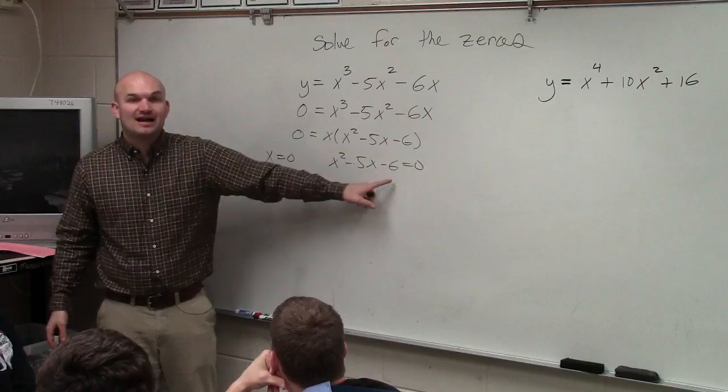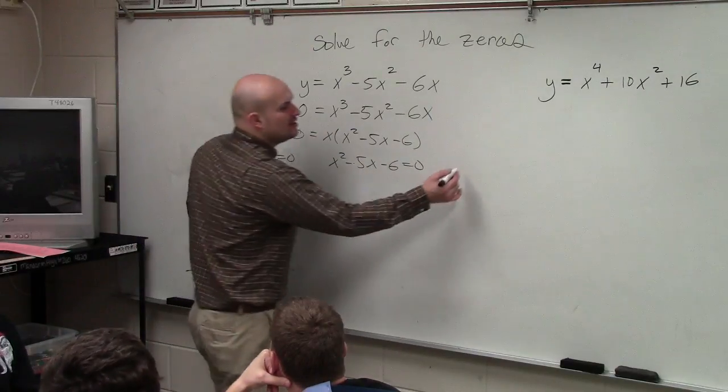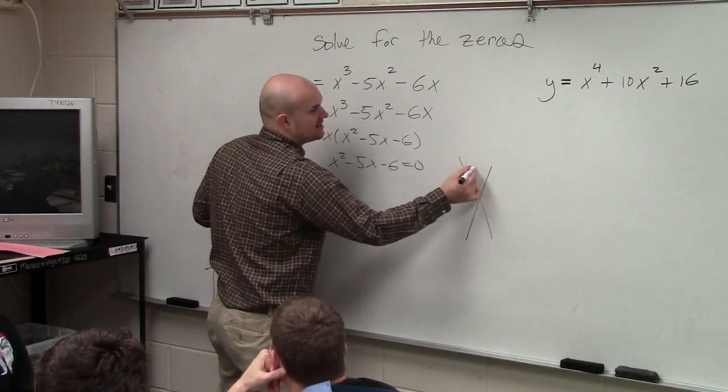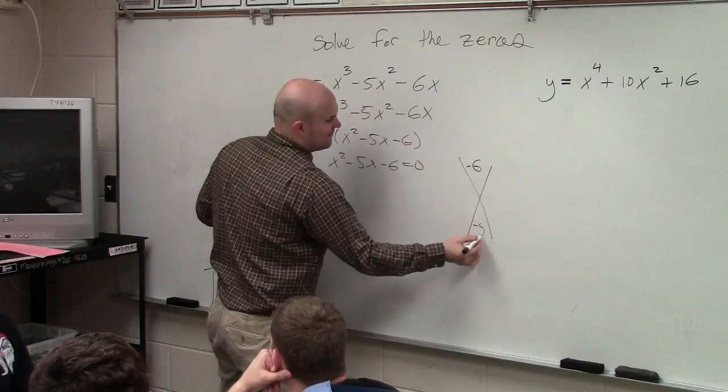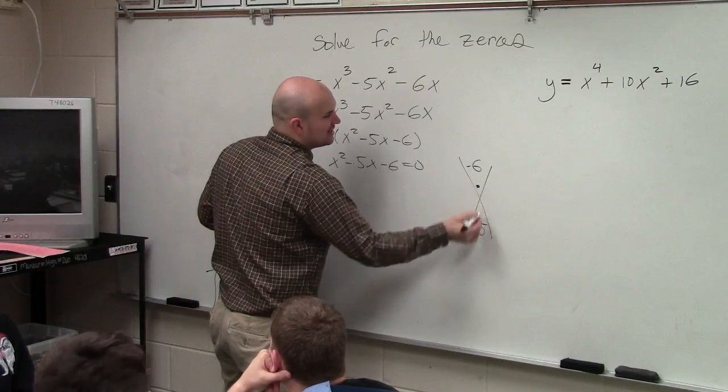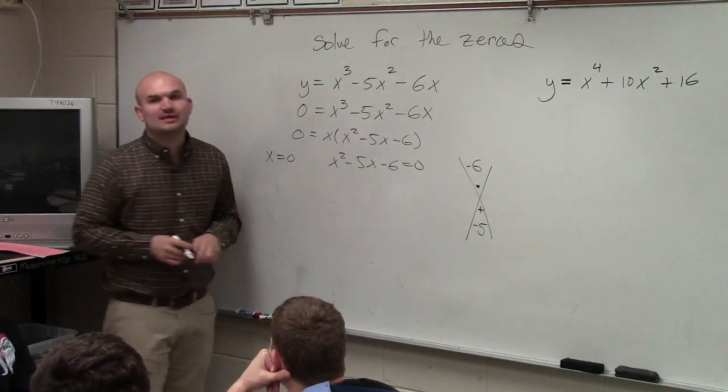So now we need to see, can I factor this further to help us solve? So I can create my diamond, and I say negative 6 and negative 5. What two numbers multiply to give me negative 6, but then add to give me negative 5?